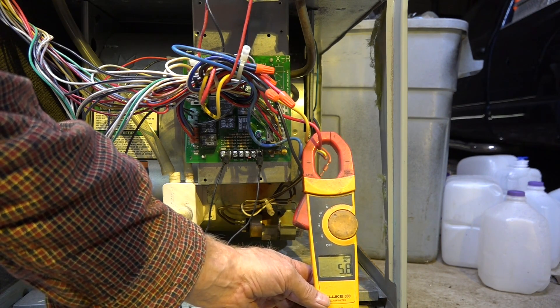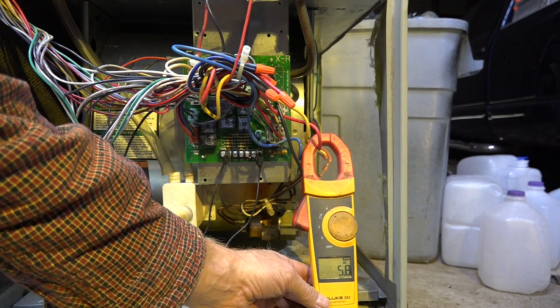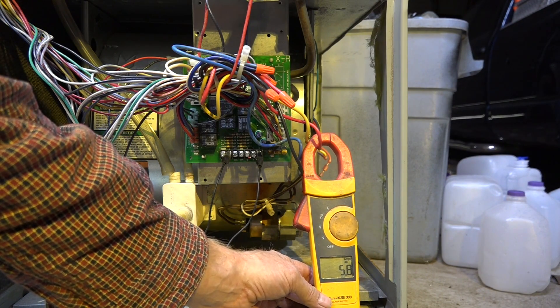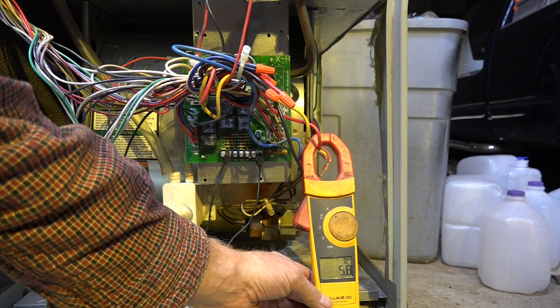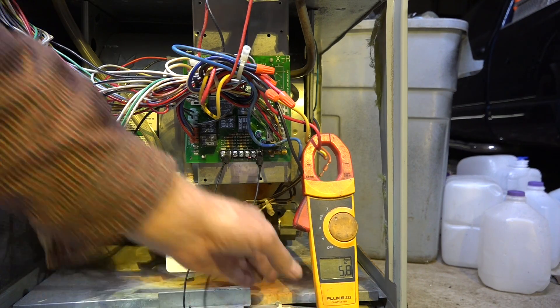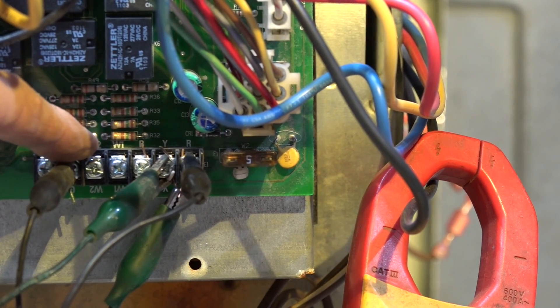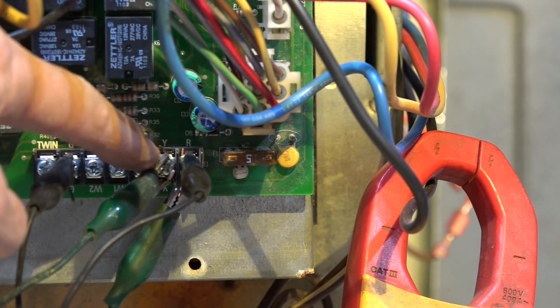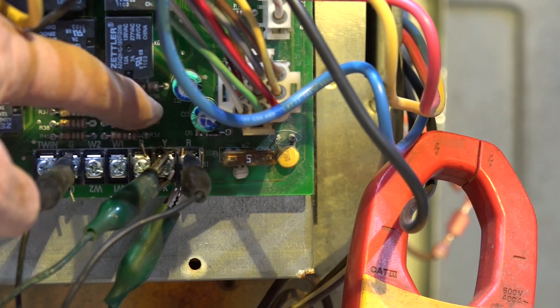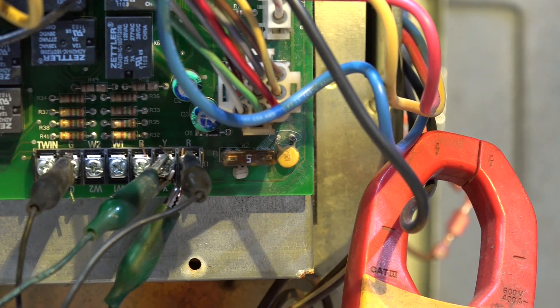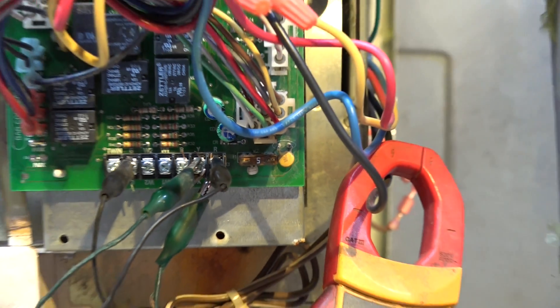Now I'm going to energize from R to Y and let's see what happens now. If you look close, I've still got my jumper from R to G, but I've also placed a jumper from R to Y. That's imitating the air conditioner has come on. Let's see what happens now.